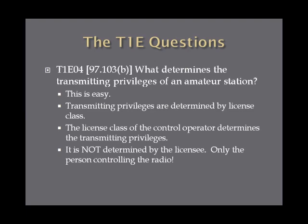What determines the transmitting privileges of an amateur station? Transmitting privileges are determined by license class, so different license classes have different privileges. The license class of the control operator is what determines the transmitting privileges of that station at that time. If the station licensee and the control operator are two separate individuals, it's the control operator who cannot exceed his license privileges.